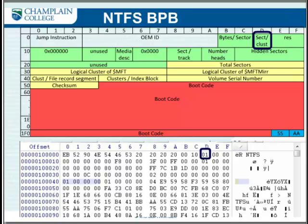Interesting thing here — sectors per cluster. If you've ever gone through and had a look at this manually, you don't normally see a 01 there; normally it would be 4. So even although the sectors are 4K, normally on a Windows system the default cluster size on NTFS is also 4K, so when you have a 4K sector you end up with a cluster size that is also the same size.